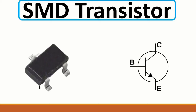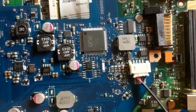Then we have the SMD transistor - it is mounted on the motherboard surface with base, collector, and emitter terminals. Always remember: base, collector, emitter. On the motherboard, here we have 'Q' - this is basically a transistor. This component shape can also be a MOSFET with the same terminals.